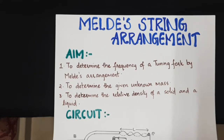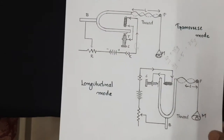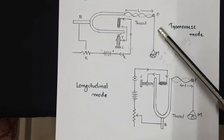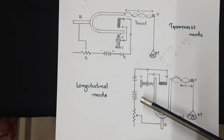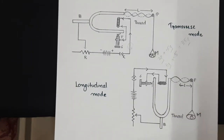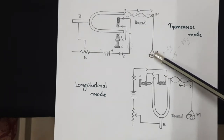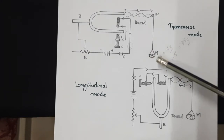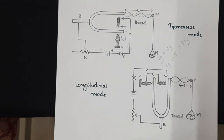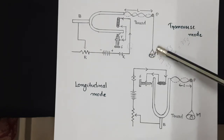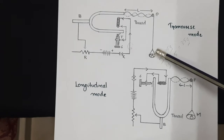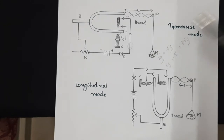We will set up the circuit in a similar manner and take readings in the transverse mode as well as the longitudinal mode with known masses, as we did for the first aim. Additionally, we will repeat the experiment by replacing the known mass with the unknown mass. First, do the experiment with the known mass, then repeat it with the unknown mass to find out the loop length.